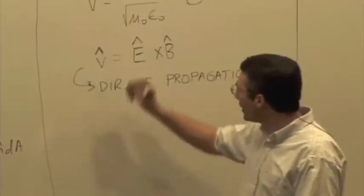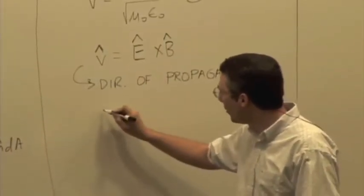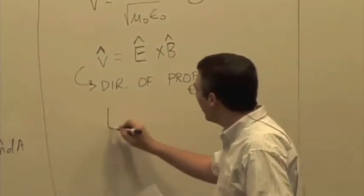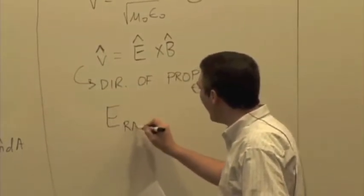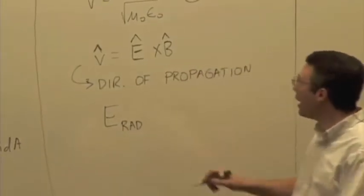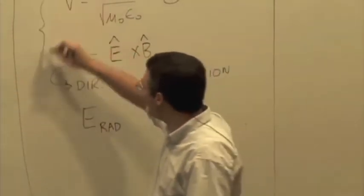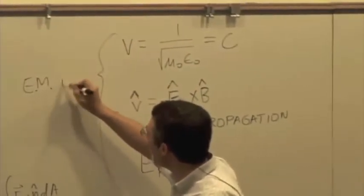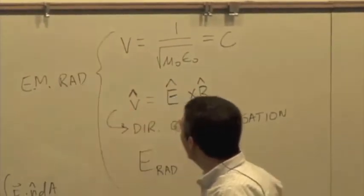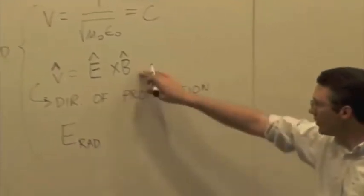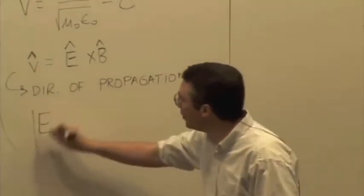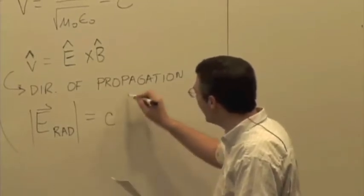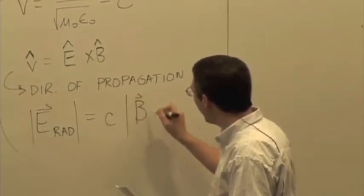There's actually a relationship between the magnitudes as well, which is that the electric field magnitude in radiation - we're just talking about radiative fields here. So this is true for EM, electromagnetic radiation. E equals C times B. This is the direction relationship. The magnitude of the electric field is equal to the speed of light times the magnitude of the magnetic field.